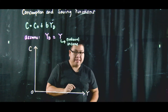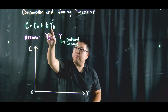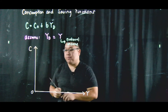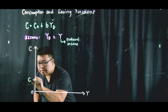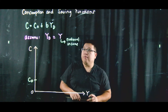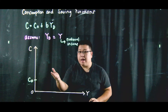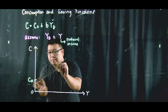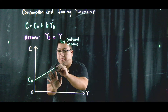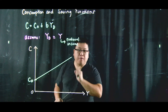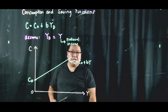If national income is zero, we're only left with autonomous consumption, which is assumed to be positive — we call that C sub zero. And since consumption increases with income as income increases, this graph should be upward sloping. We write it as C equals C sub zero plus B times Y.